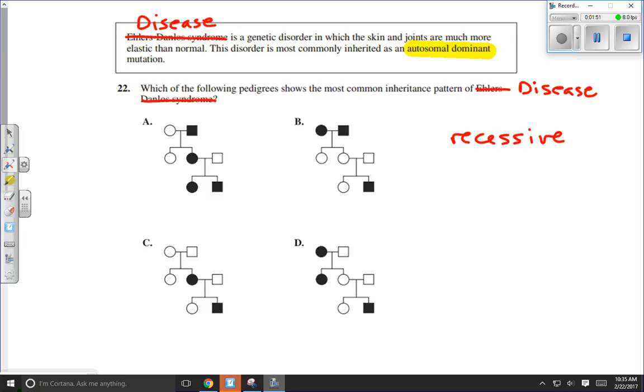For example, if I look at answer B here, I can see that there is an individual right here who has the trait and neither parent has the trait, which tells me that pedigree chart is for a recessive trait, not a dominant trait. And we are clearly here looking for a dominant trait. So I can eliminate that answer.